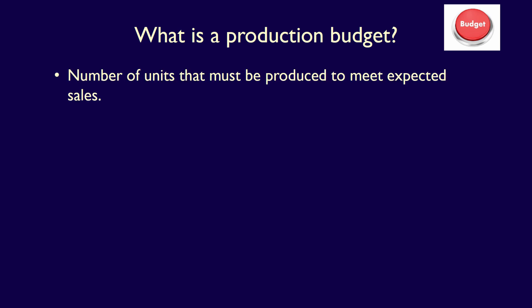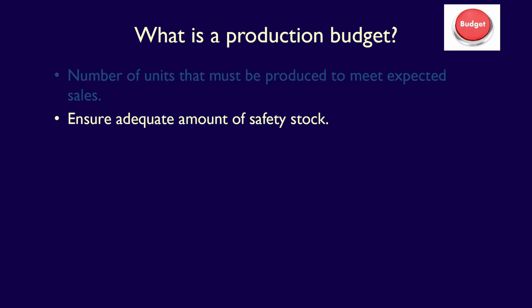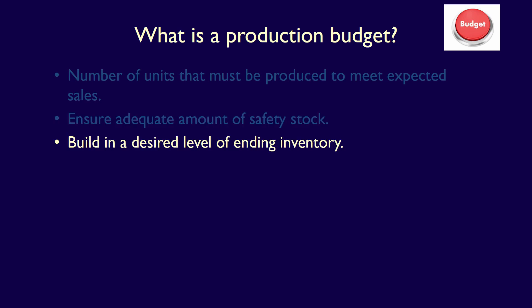What is a production budget? The production budget shows the number of units the company must produce, not only to meet expected sales, but also to ensure the company has safety stock. Safety stock is inventory kept on hand to either meet demand that is higher than expected or to allow for production issues, such as machine breakdowns. Management does this by estimating the desired level of ending inventory when planning for production.